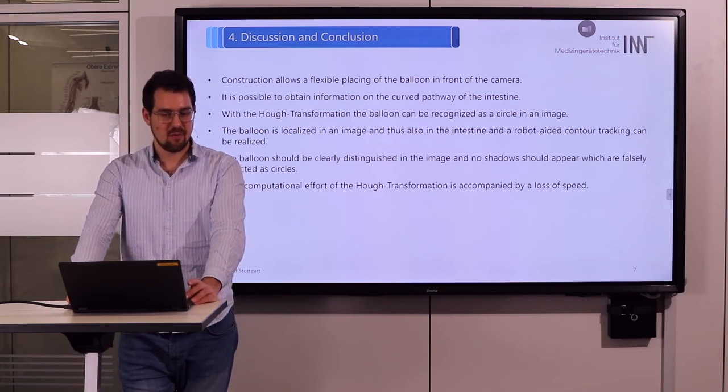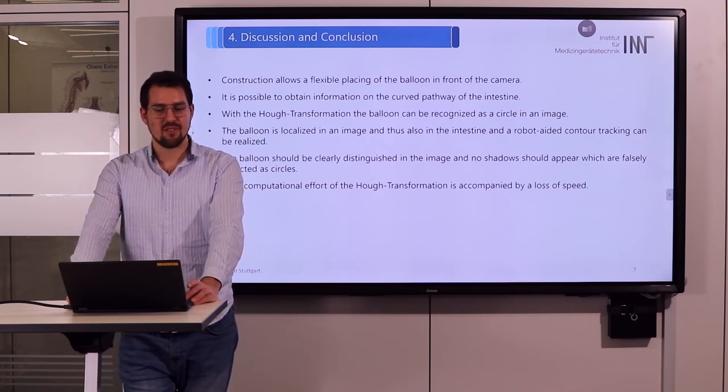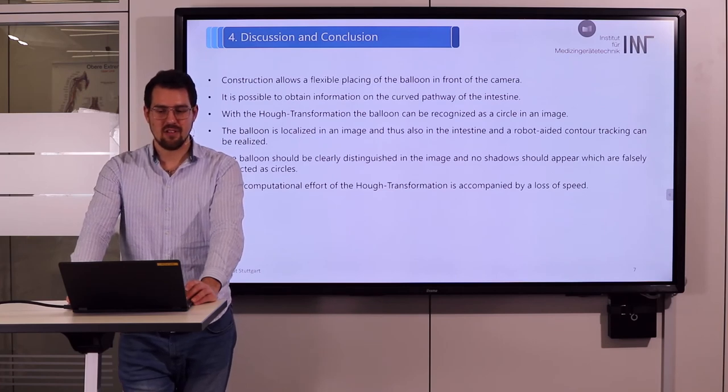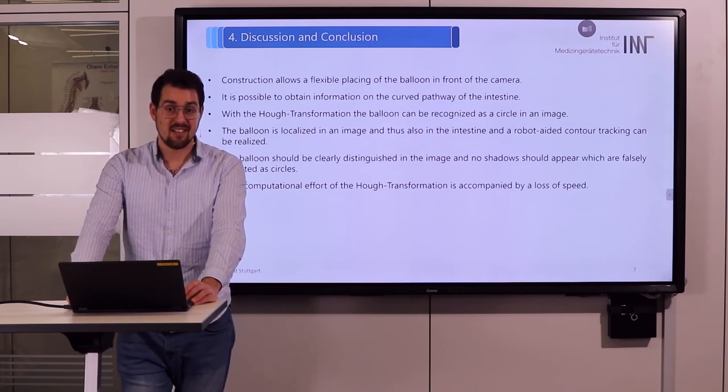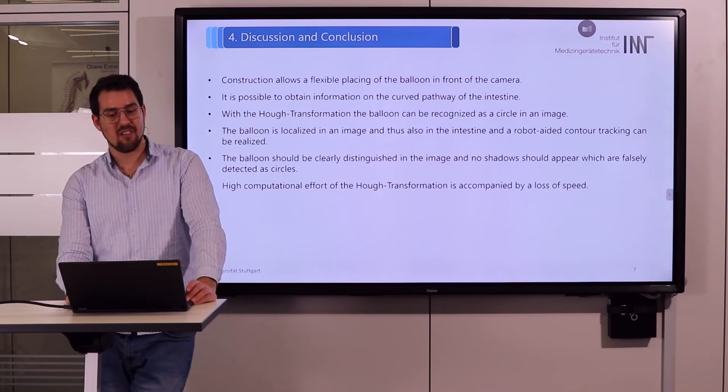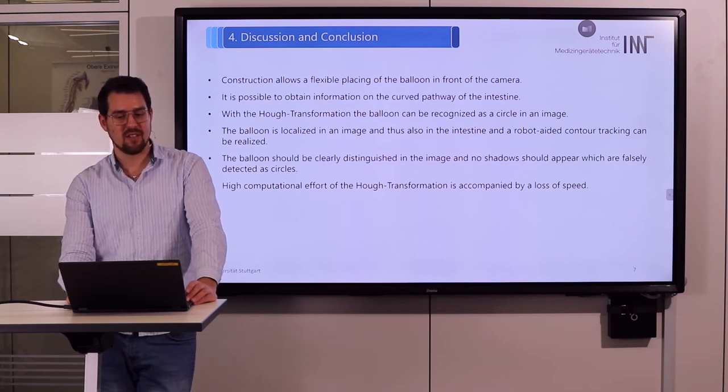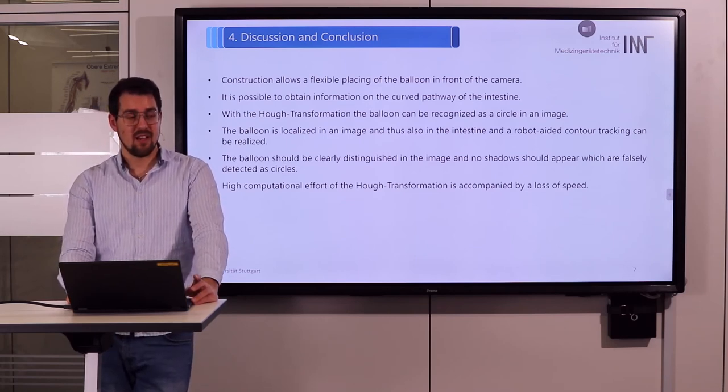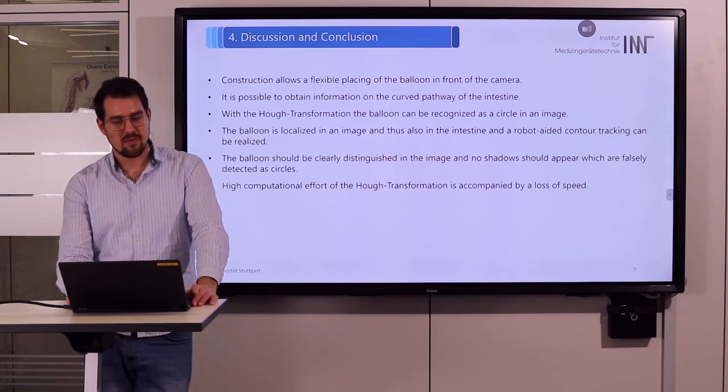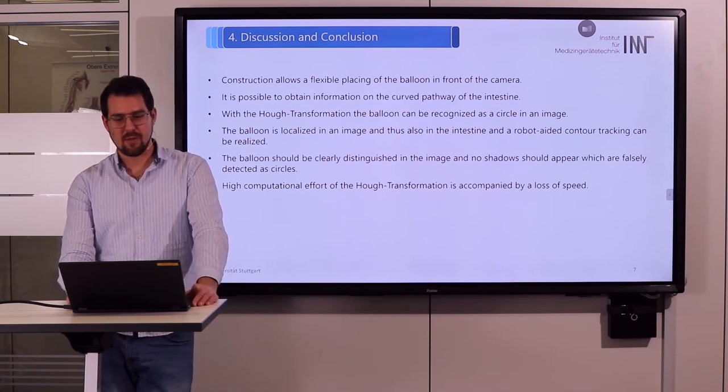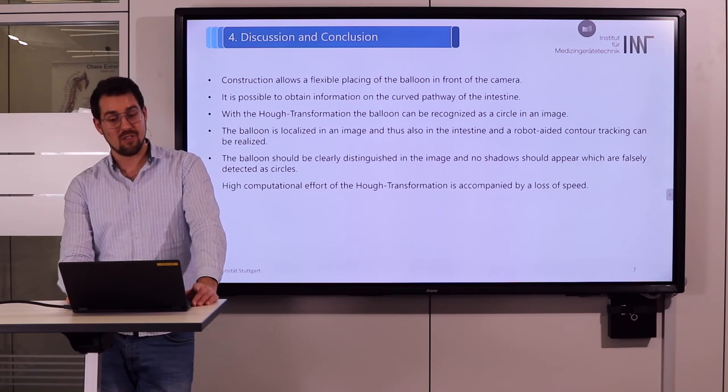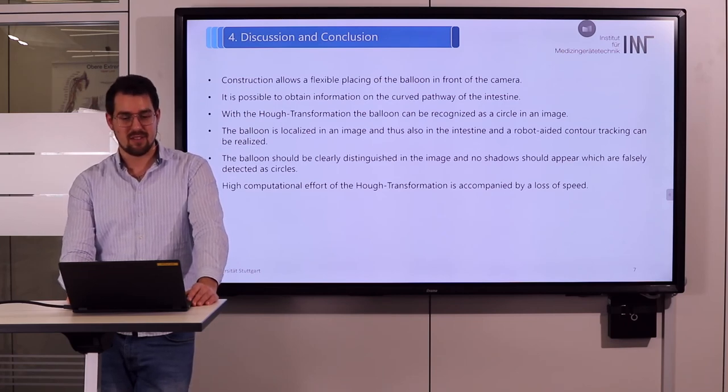However, the illumination of the intestine and balloon is insufficient at the moment, which is why it was not always detected due to low contrast. In addition, the high computational effort of the Hough transformation results in a loss of speed. You can see in the video we only have about 5 frames per second, when we want 20-25 frames per second.